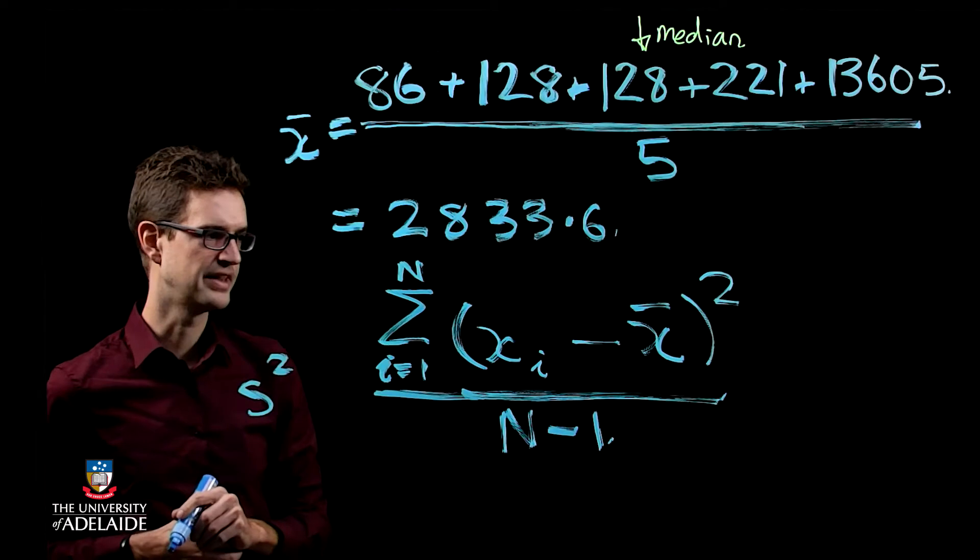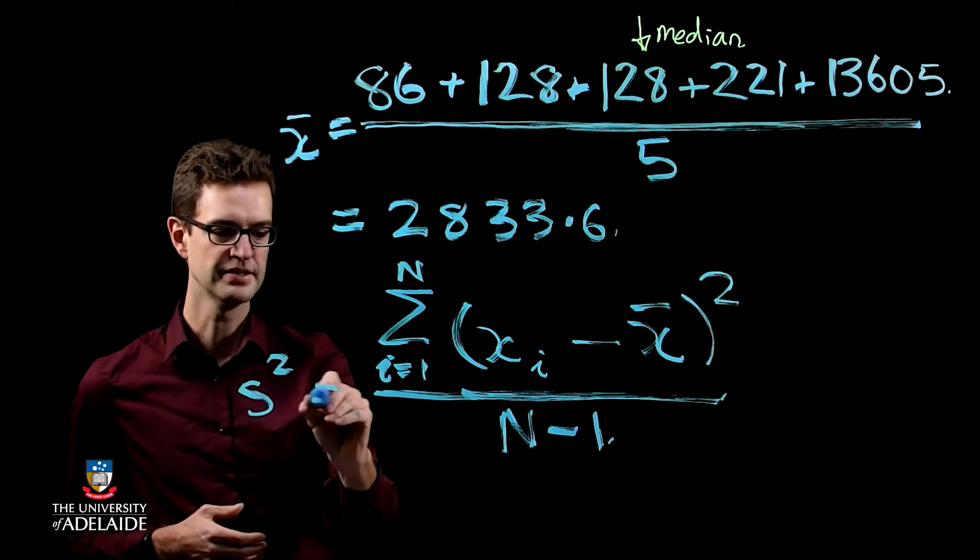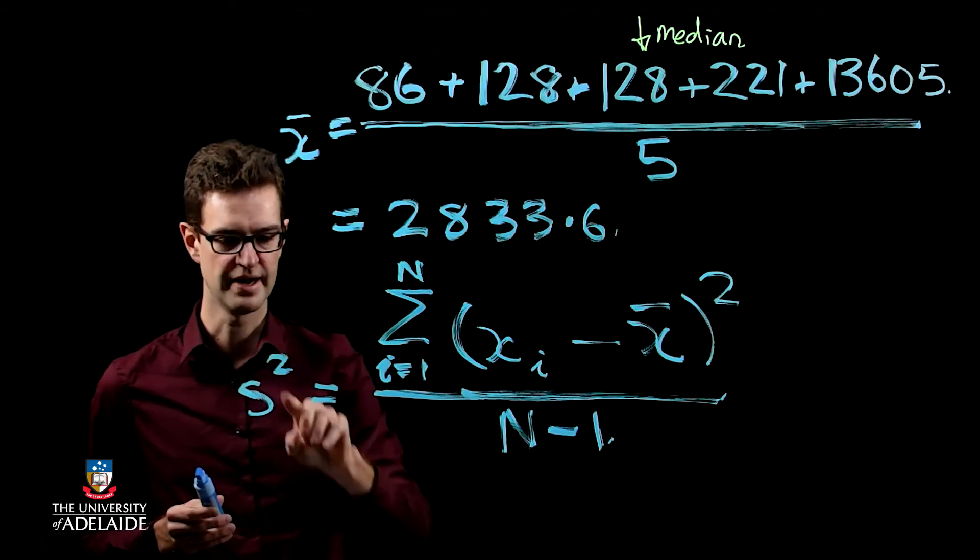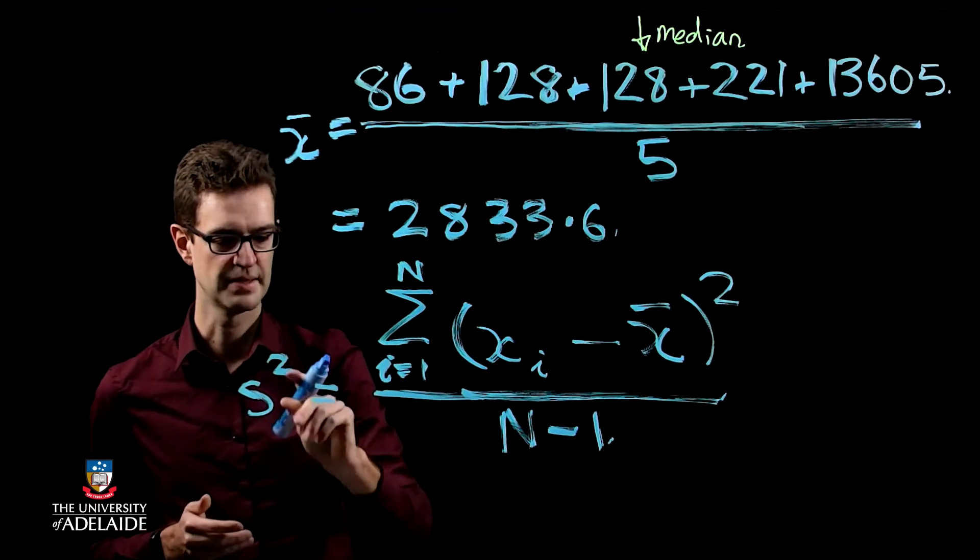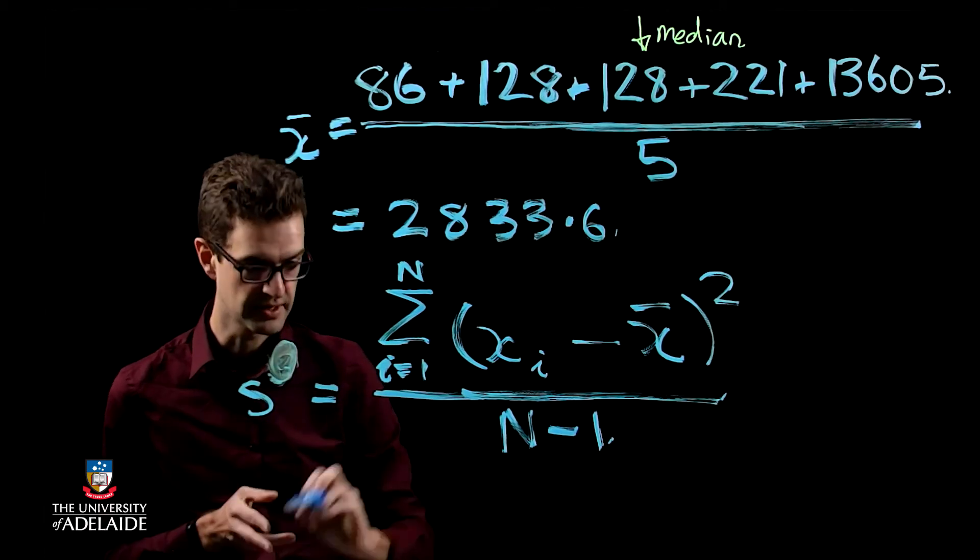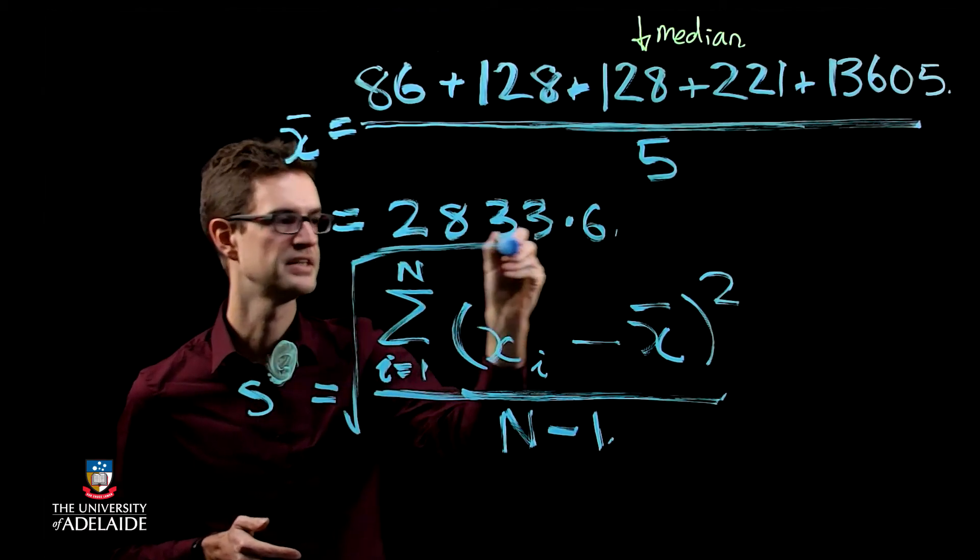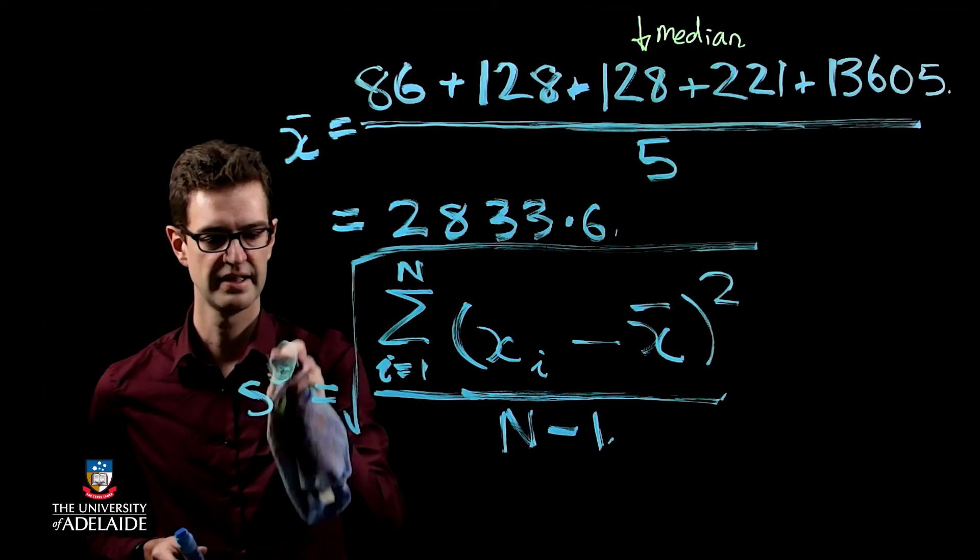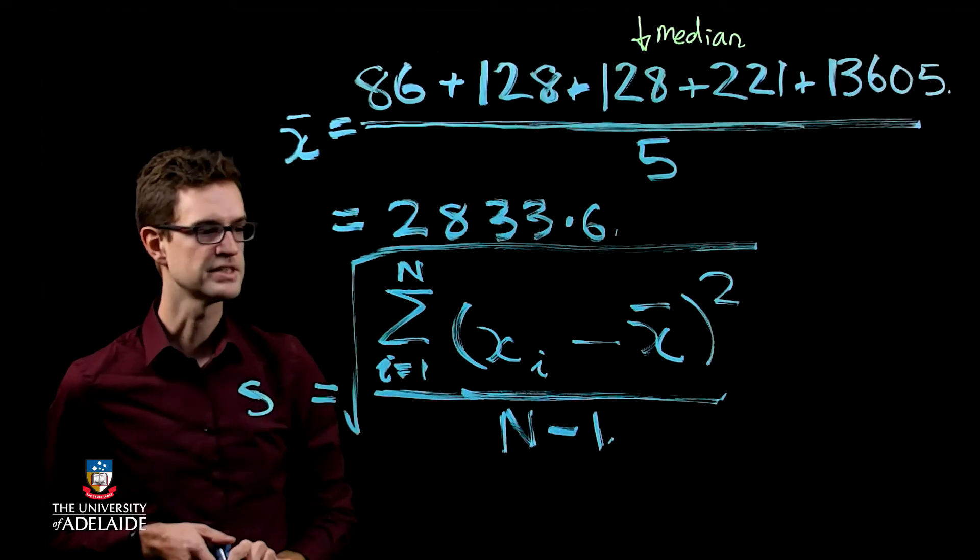So actually what I've calculated there, that's the sample variance. So that's the square of the standard deviation because it's got a square in it up here. If I want to convert that to something back that's in the same units, same sort of units as what I had before, then I need to take the square root of all of that, and that gives me the sample standard deviation, s.